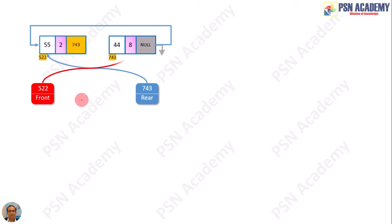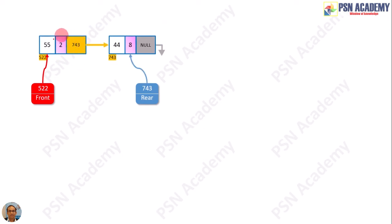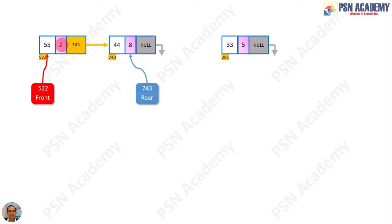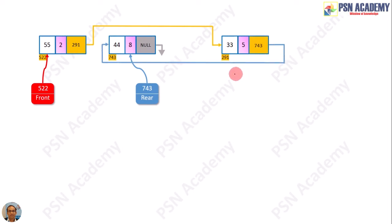If we rearrange, it will look nicer. Now we add another node located at 291 with priority 5. This new node must be inserted between the first node and the second node, because the first node has priority 2, the second node has priority 8, and the new node has priority 5. So the next pointer of 522 will be changed to point to 291, and the null pointer of 291 will point to 743. So 522 is the first node, 291 is the second node, and 743 is the third node.